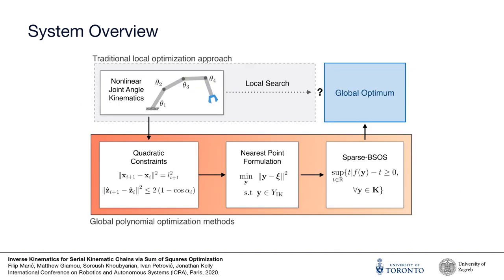In summary, we cast the inverse kinematics problem as a quadratically constrained quadratic program. This allows us to formulate a nearest point cost function that identifies a unique solution amongst infinite solutions for redundant manipulators. Our cost function also allows us to prove a theorem that guarantees global convergence for certain choices in the nearest point. Finally, the sparse bounded sum of squares algorithm is used to transform the non-convex polynomial optimization problem into a convex semidefinite program that can then be used to find a global optimum.